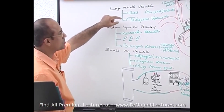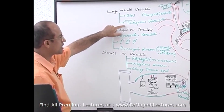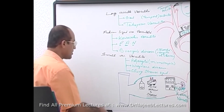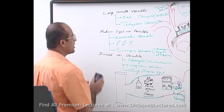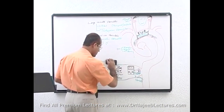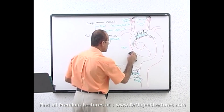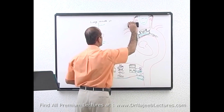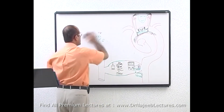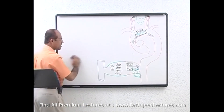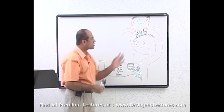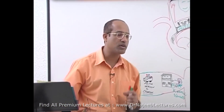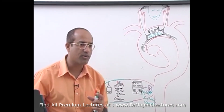We are now discussing large vessel vasculitis. We will cover Takayasu's arteritis in detail, followed by temporal arteritis and other types of vasculitis. Takayasu's arteritis is a vasculitic inflammation of large arteries — specifically, it is inflammation of the aorta and its branches.